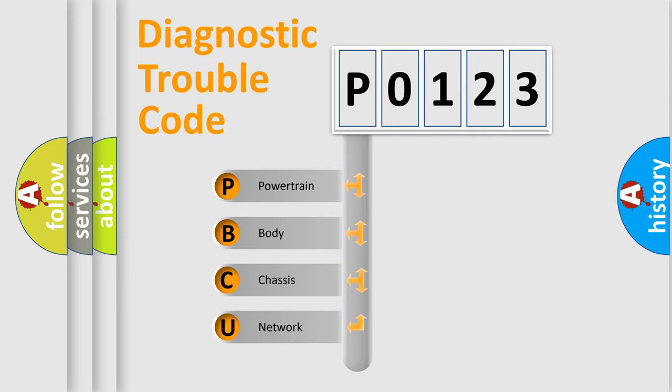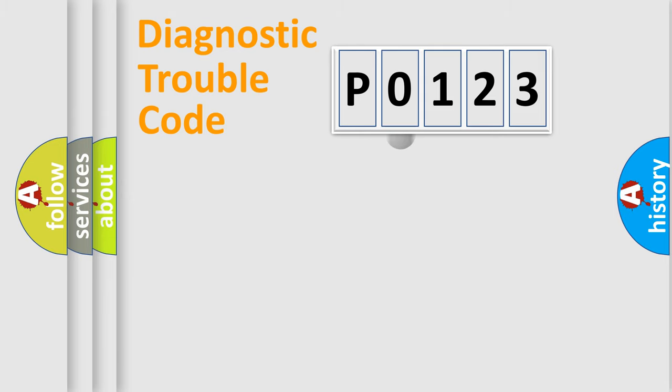We divide the electric system of automobile into four basic units: powertrain, body, chassis, and network. This distribution is defined in the first character code.